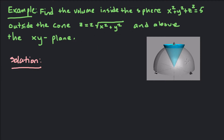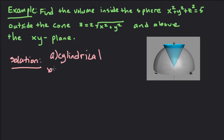So that region looks like this, but we want to stay outside the cone. There are two approaches we can use. First, part a, we can use cylindrical coordinates. And then part b, we can try spherical coordinates.